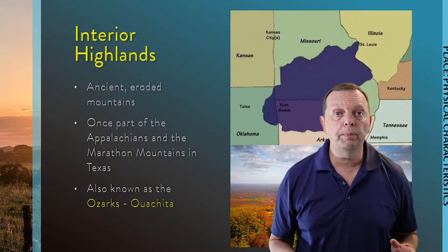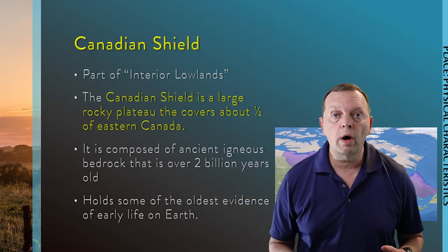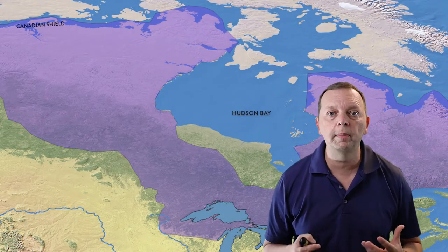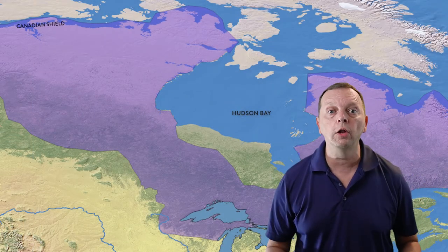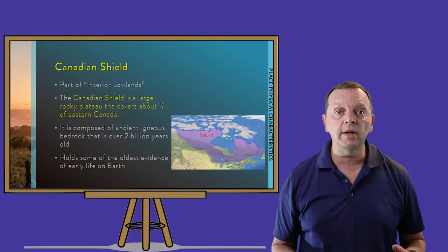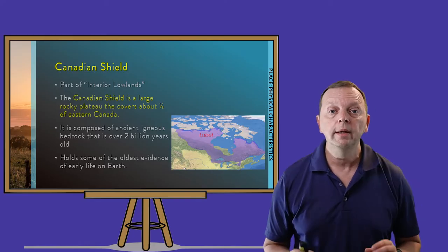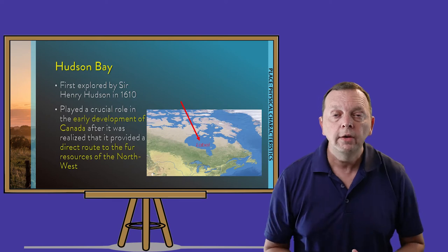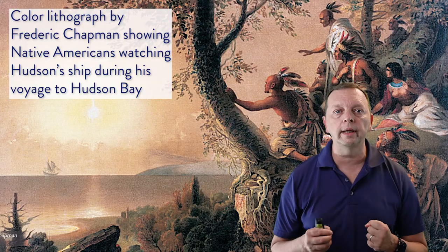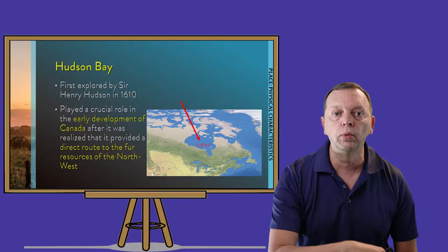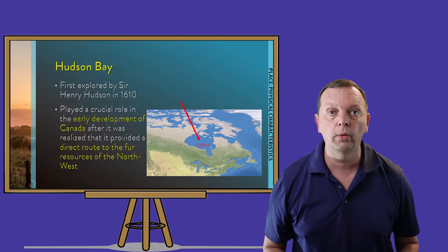In Canada, the Interior Plains become the Canadian Shield. This large rock plateau covers the eastern half of Canada and contains some of the oldest rock found in the world, dating all the way back 2 billion years. It is in this ancient rock that we can find some of the oldest evidence of early life on Earth. The Canadian Shield wraps around the southern half of Hudson Bay. Named by Sir Henry Hudson, who discovered it in 1610, Hudson Bay was key to early Canadian development, as the British found the bay allows access to the rich fur resources of the Canadian Northwest.